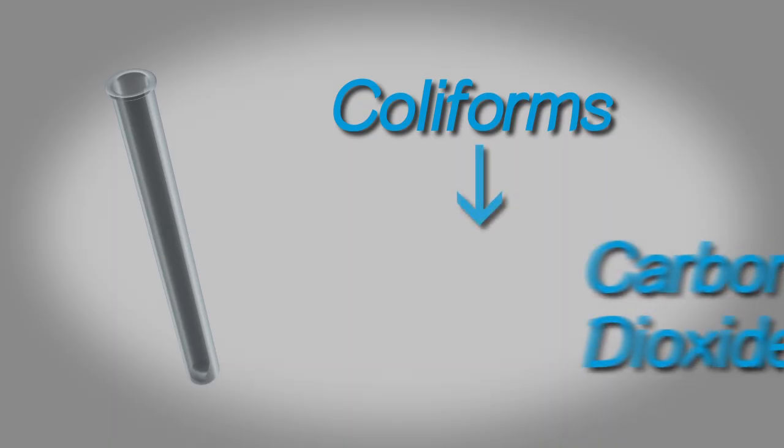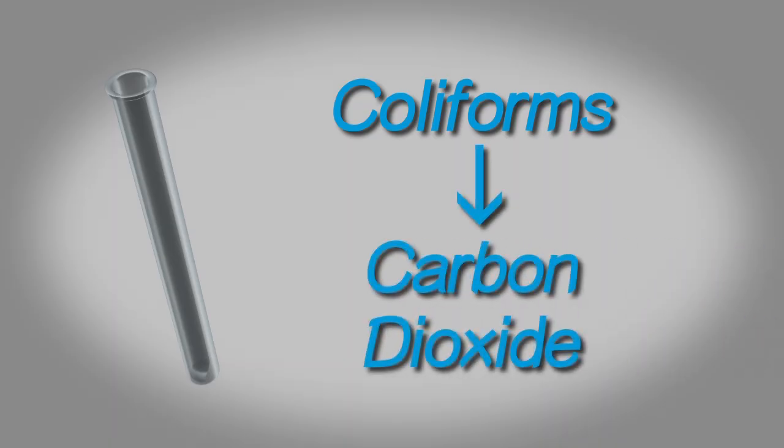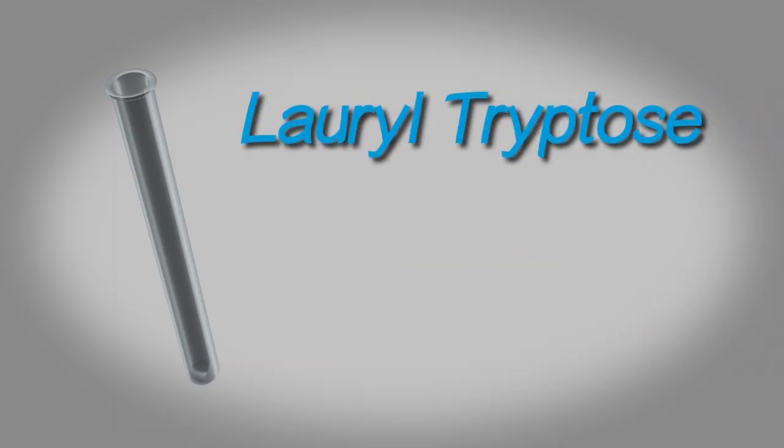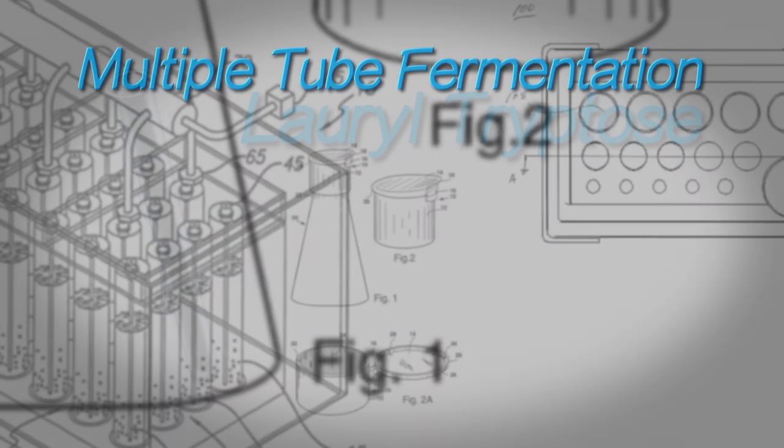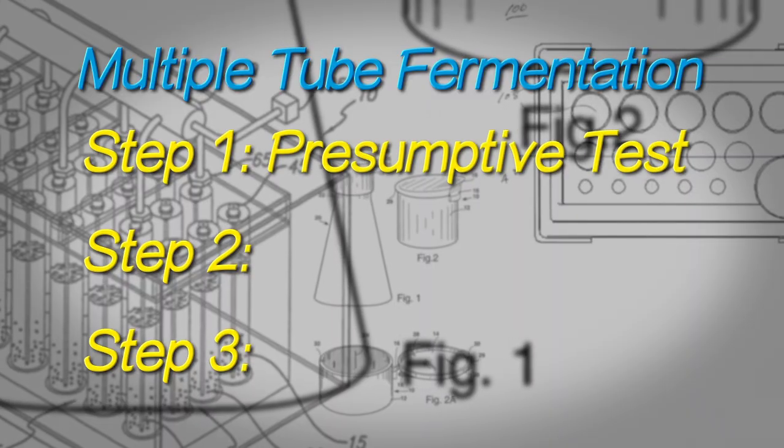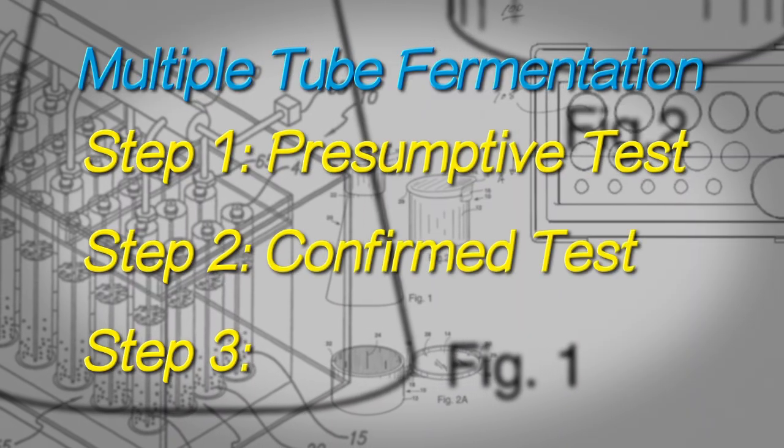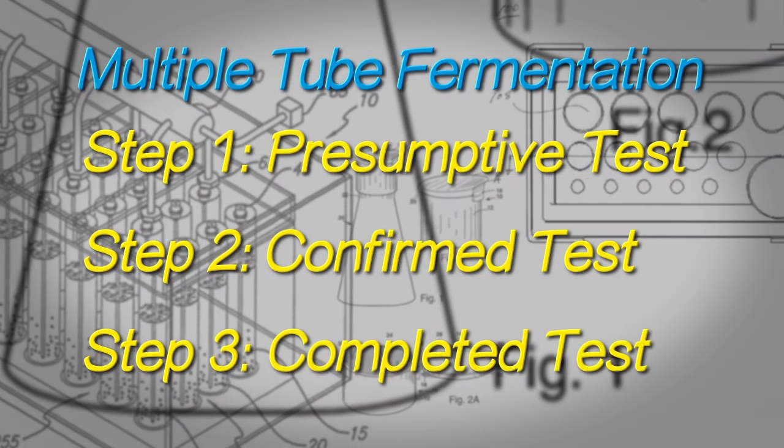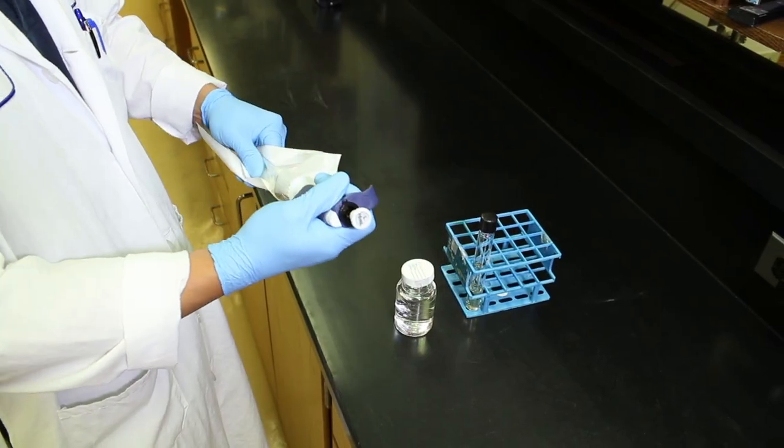In this method, we look for the evidence of gas production in the test tubes. This is because coliforms will produce carbon dioxide gas from sugars, such as lauryl tryptose. The multiple-tube fermentation analysis has three steps: the presumptive test, the confirmed test, and the completed test.